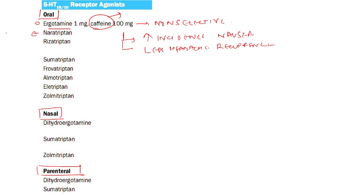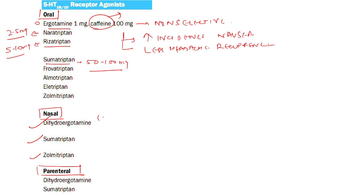Nasal formulations are available for three drugs: dihydroergotamine, sumatriptan, and zolmitriptan, used in patients requiring a non-oral route. Substantial blood levels are reached within 30 to 60 minutes, but efficacy is only 50 to 60 percent.